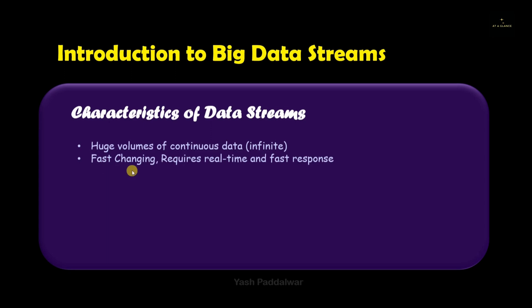As it is streaming data, it is fast-changing. We cannot predict what type or in what format the next data will come. Hence it is fast-changing and also requires real-time and fast response — whenever data is received, some response or outcome must be generated at the same time. Therefore the processing and knowledge extraction from streaming data has to be real-time. Since outcome generation must be this fast, obviously robust and expensive resources will be required.